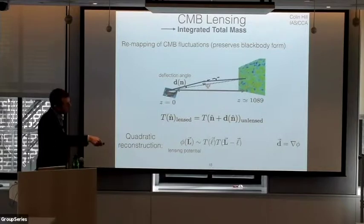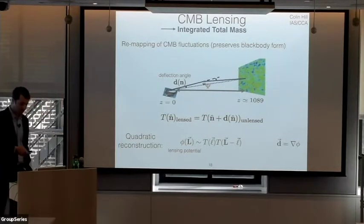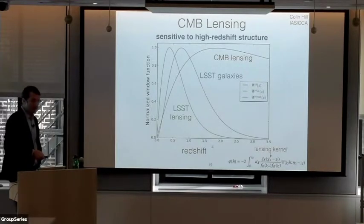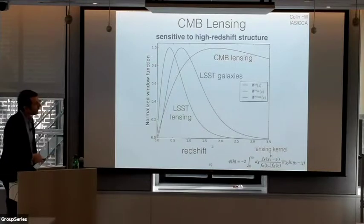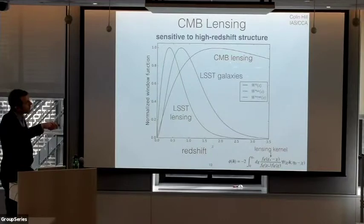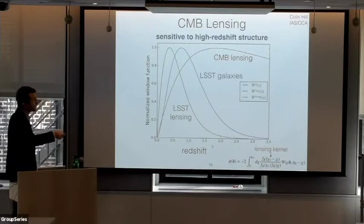With quadratic pairs of temperature fields or polarization fields, we can infer maps of the lensing potential. One neat thing about CMB lensing is that it's sensitive to high-redshift structures. The lensing kernel for the CMB peaks at around redshift 2 but extends all the way out to redshift 1100 in principle, although structure hasn't grown too much until later times.